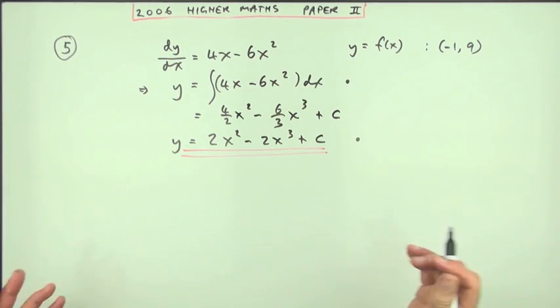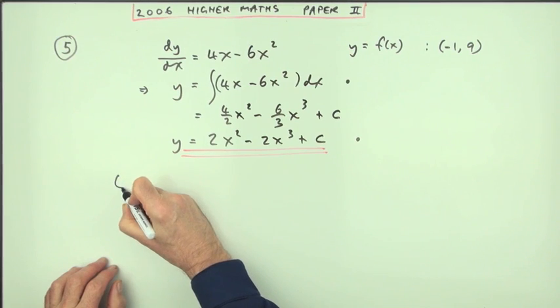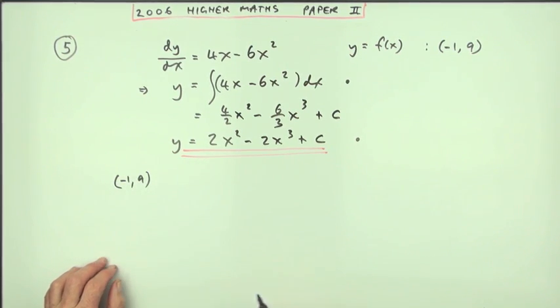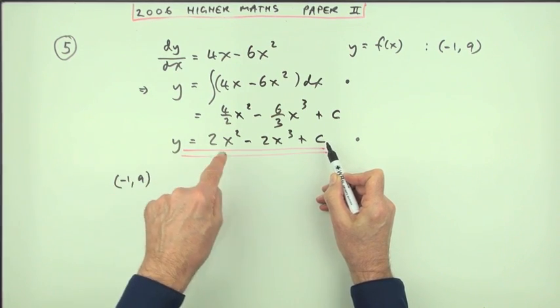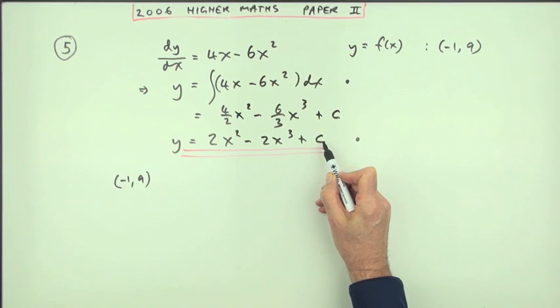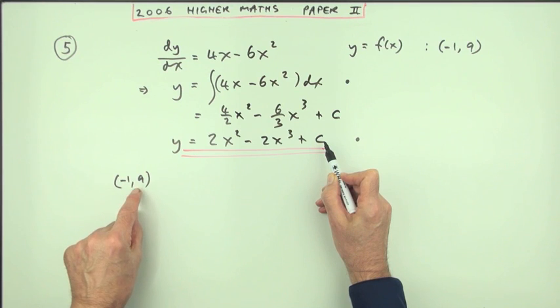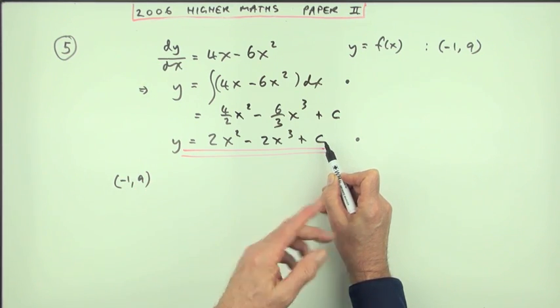Still, just feeding those numbers in, which is what you'd probably naturally do, you'd say, well, negative 1, 9 means I can figure out what c is. There are three letters in this. If I want one of them, I need to replace two of them with numbers. Well, I can put negative 1 for x, 9 for y, and that'll just leave me c, and then that'll be it done.